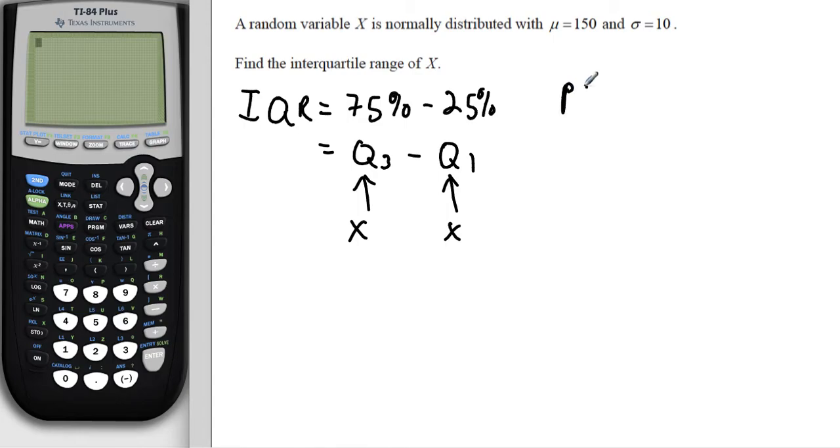So we're trying to see the probability that x is less than some value is 0.25. The probability that x1 for quartile 1 is less than some value x is equal to 0.25, and the probability that x3 for quartile 3 less than some value x is equal to 0.75.